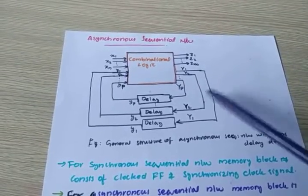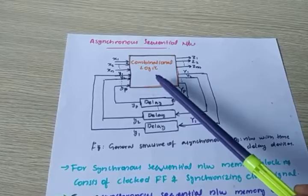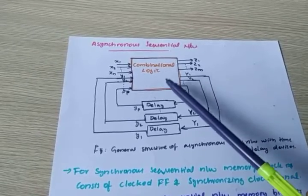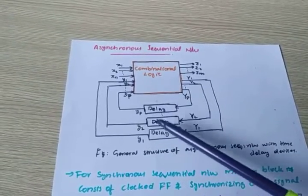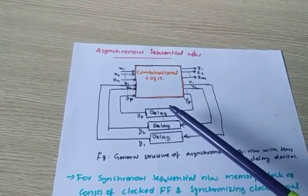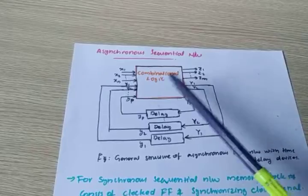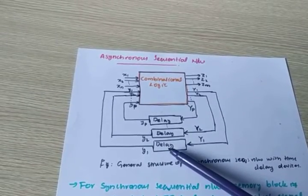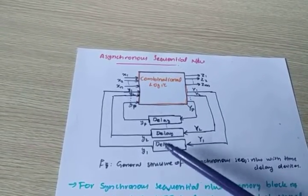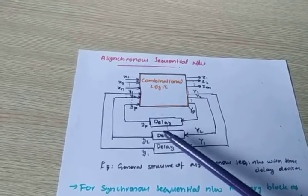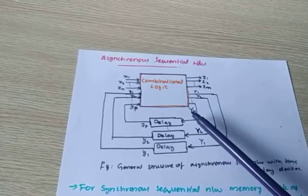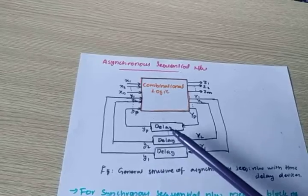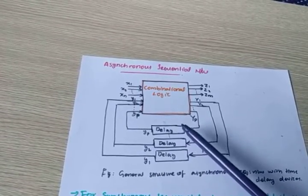This is the general structure of Asynchronous Sequential Network. As usual we have combinational logic and then some memory element. In Synchronous Sequential Circuits, the memory units are clocked flip-flops. But in Asynchronous Sequential Circuits, instead of clocked flip-flops we have a delay element — or you can use an unclocked flip-flop — in the feedback path. That means a latch.